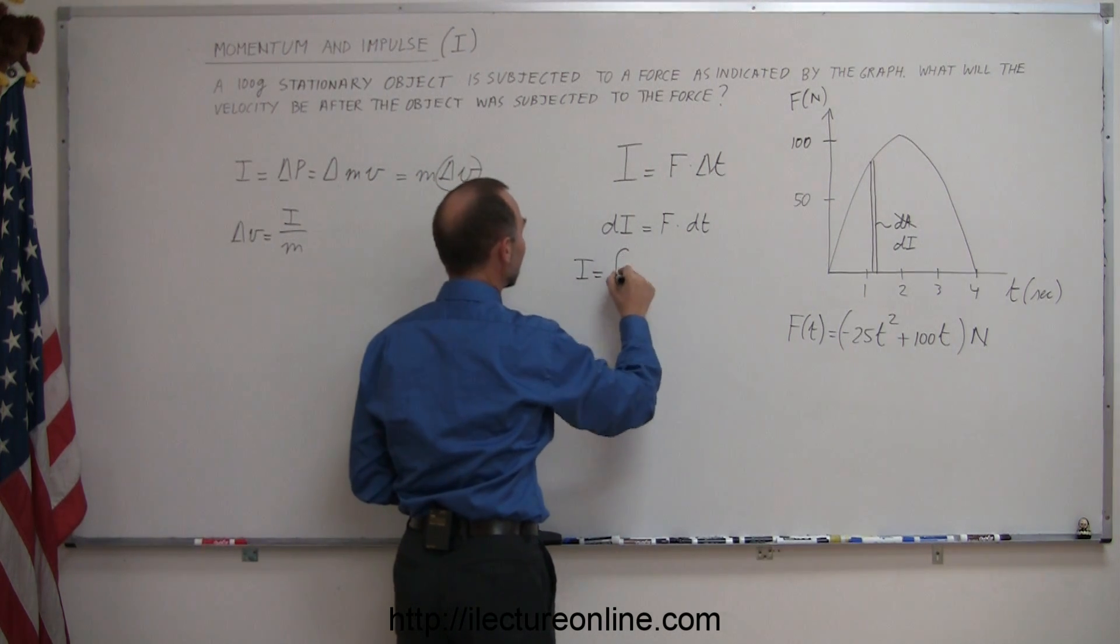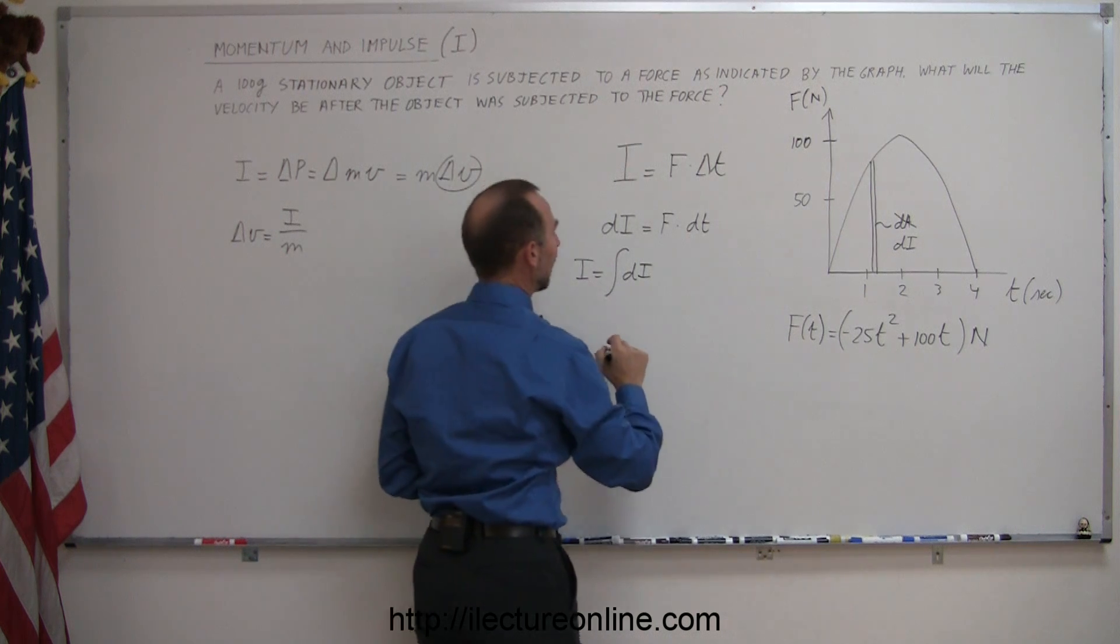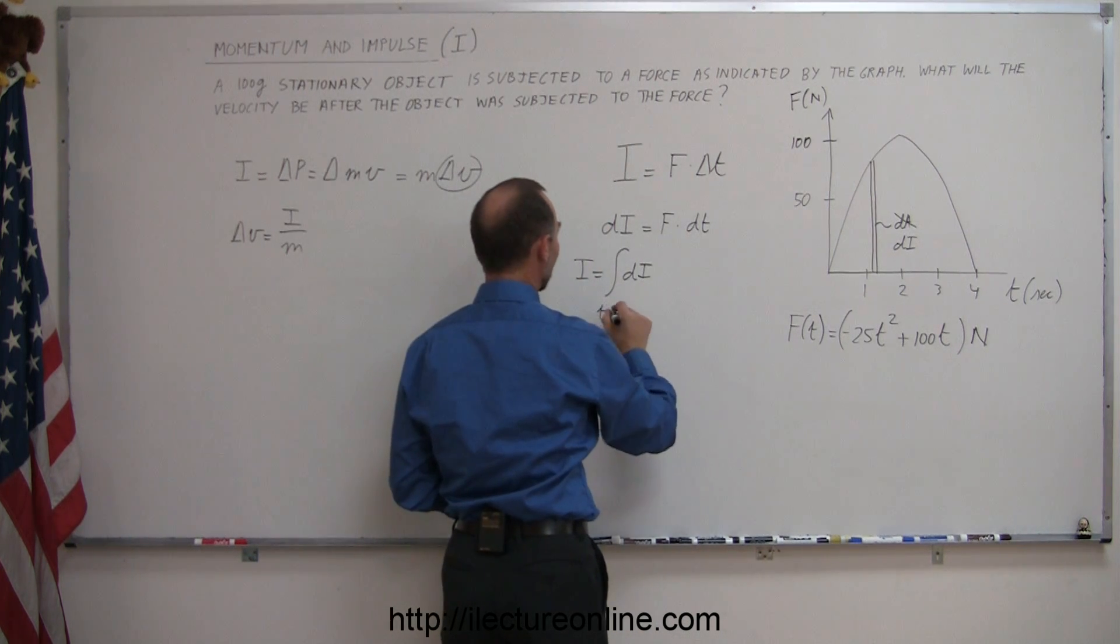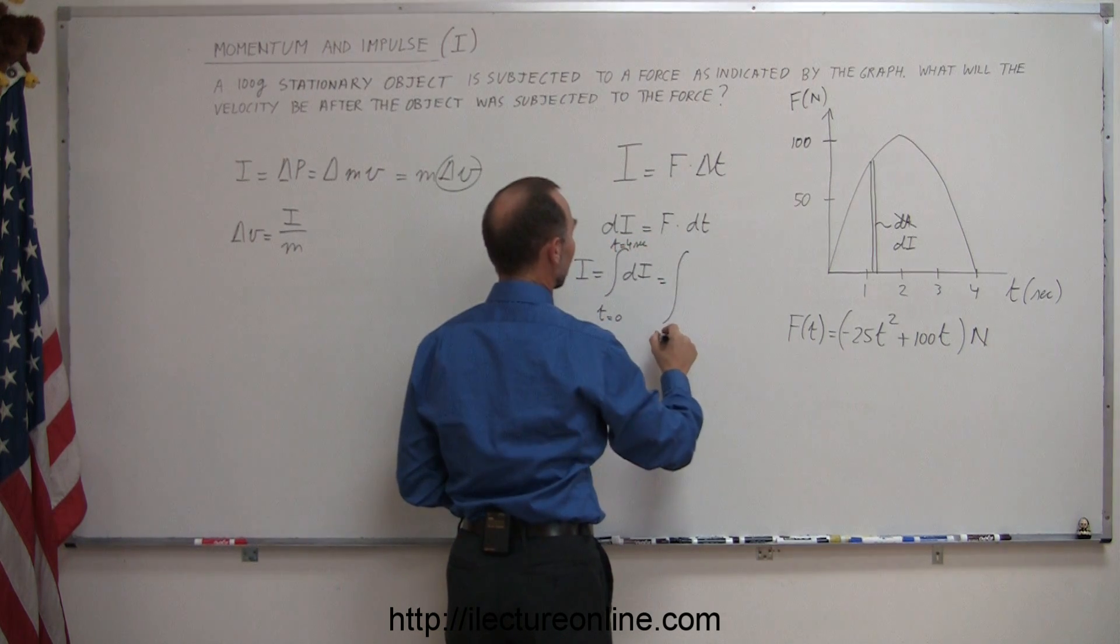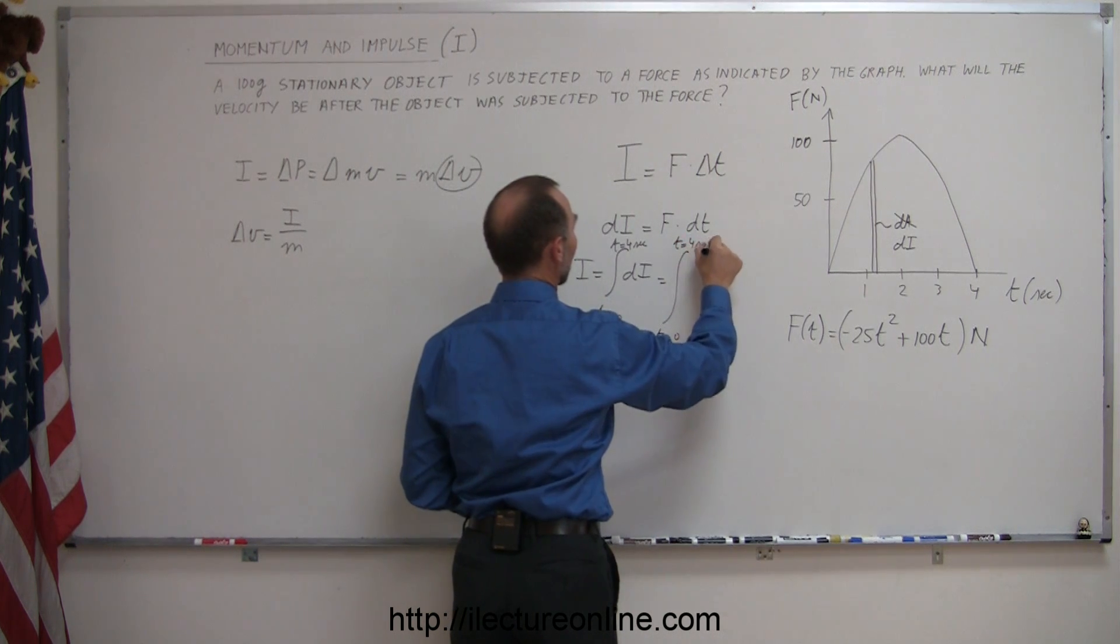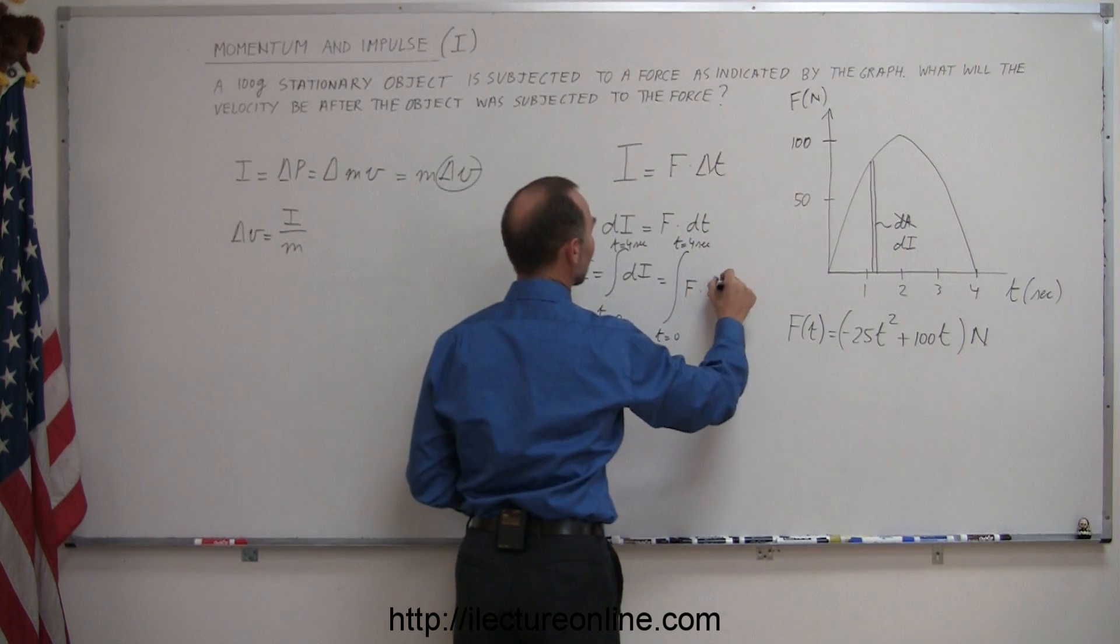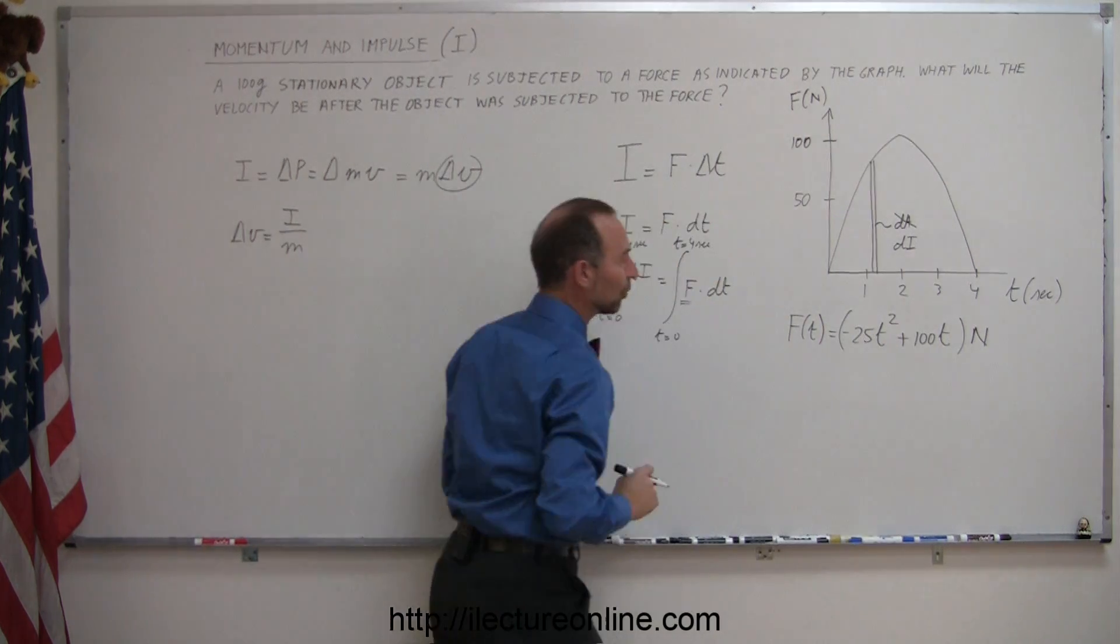If I want to find the whole impulse, that's equal to the integral of all the little dI's. I sum them all up and I go from time equals zero to time equals four seconds, which is equal to the integral from t=0 to t=4 seconds of the force times dt.